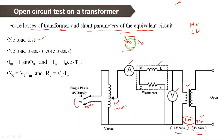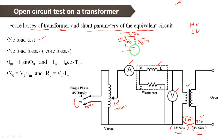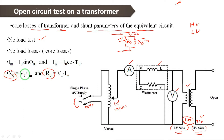If we have the no-load components, we can calculate R0 and X0. We have two components: the working component IW and the magnetizing component IM. The magnetizing component produces the flux. If we find these shunt equivalent parameters, the result will be core losses, and R0 and X0 parameters will be found.